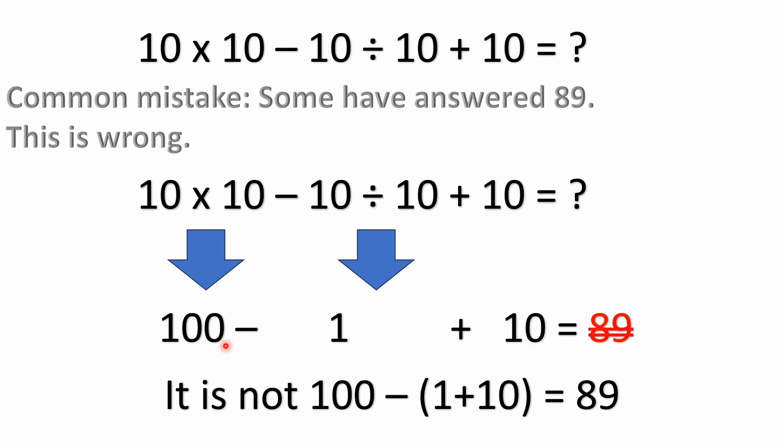There is a difference between 100 minus 1 plus 10 and 100 minus the quantity 1 plus 10 inside of parentheses. This one down here does equal 89. But there's a big difference between putting the parentheses around the 1 plus 10 and not having parentheses.